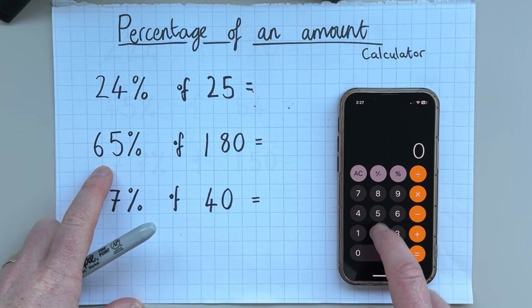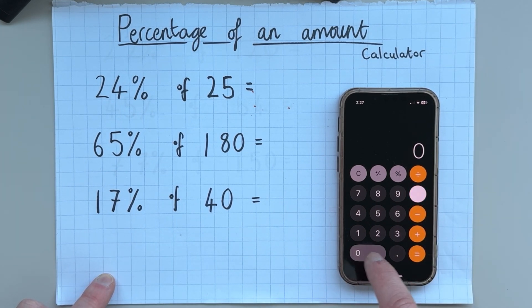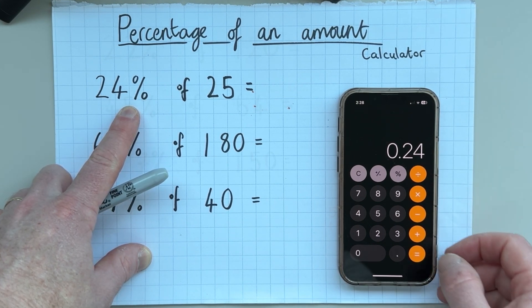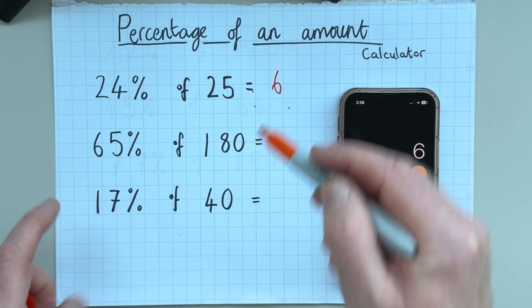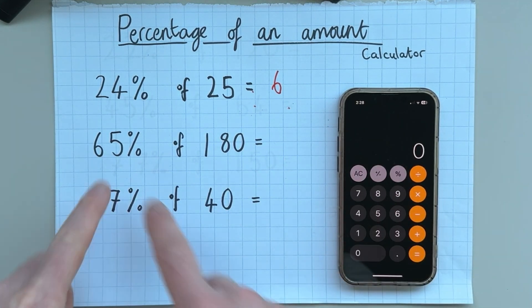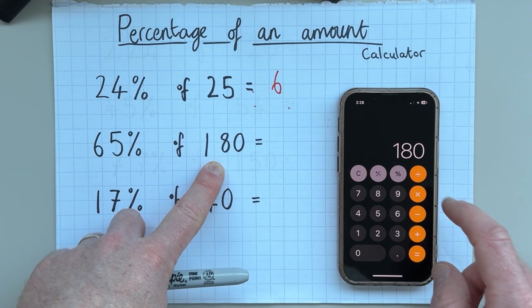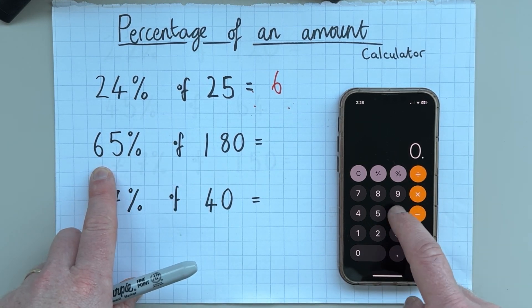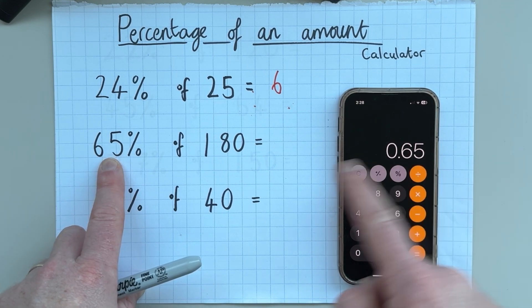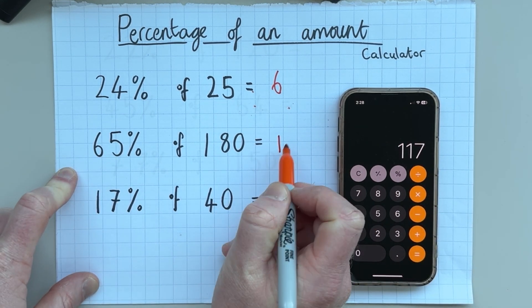So I'm going to take 25 and all I'm going to do is I'm going to multiply it by 0.24. So that is 24% as a decimal and it still gives us the answer of 6. So using my technique I'm going to take 180 the number that I want to find the percentage of then I'm going to multiply it by 0.65 because that is 65% as a decimal and the answer is 117.